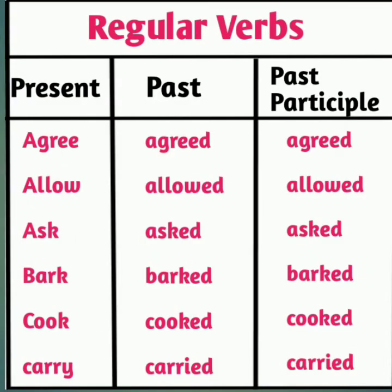Now let's see some regular verbs. Agree, agreed, agreed — यहाँ agree present form यानि base form है, agreed past form है, और agreed past participle form है. Agree के पीछे सिर्फ d को add किया गया है. Allow, allowed, allowed — allow base form यानि present form है, और उसमें ed को add किया गया है past form और past participle form दोनों में.